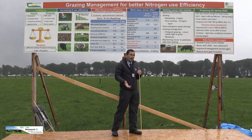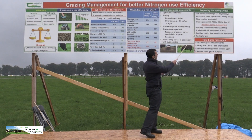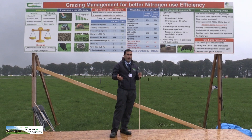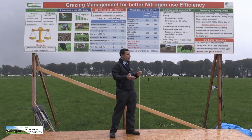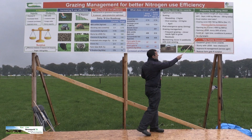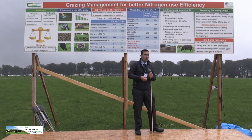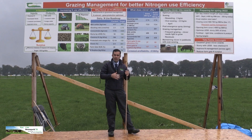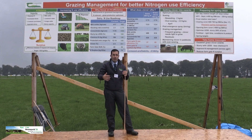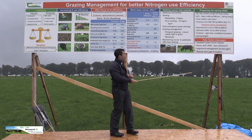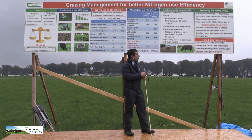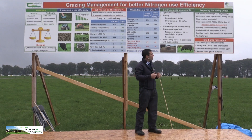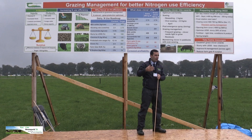We need to reduce our demand now, increase the rotation length, and let cover build up as much as possible. The final rotation start will differ between farms but will be between the 1st and 10th of October — the higher the stocking rate, the earlier that closing date. The key thing we must maintain is a closing cover of between 650 and 750 kilos on the 1st of December — not on the date of housing, but the 1st of December. If farm cover drops below 650 kilos on the 1st of December, we won't have enough grass the following spring to target an opening farm cover of 950 to 1,000 kilos. Higher farm cover also leads to a reduction in chemical fertilizer use.